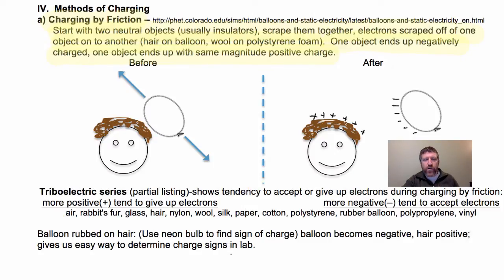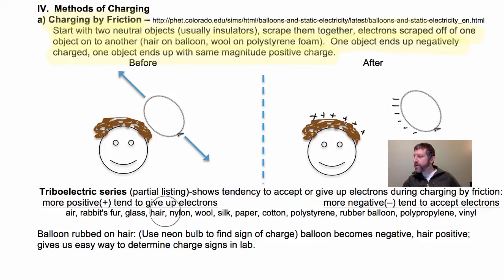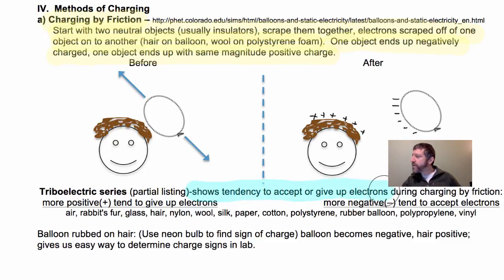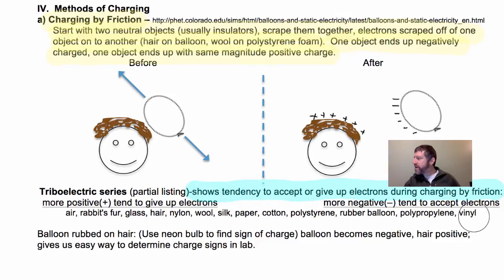When you're charging by friction, a good thing to understand is what we call the triboelectric series. The triboelectric series is just a list — I've given a partial listing here — and it simply rank orders different types of insulators in their tendency to accept or give up electrons during charging by friction. Things on the left tend to give up electrons more easily; things on the right tend to accept electrons most easily.